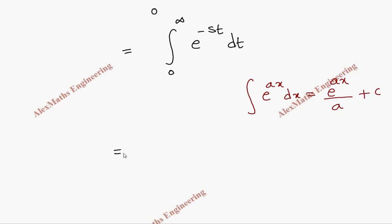By doing so, in this term it is e power minus st divided by minus s, and we don't put plus c because we have limit from 0 to infinity.